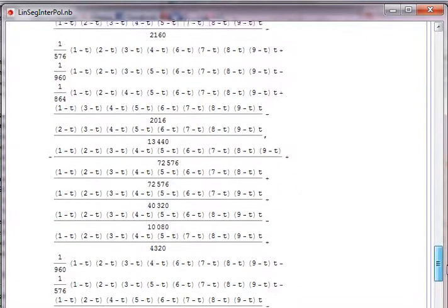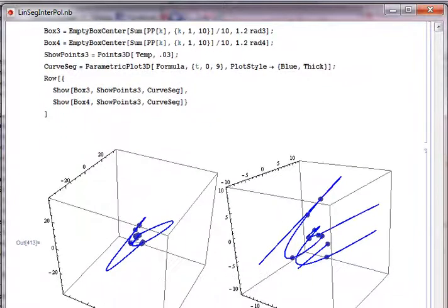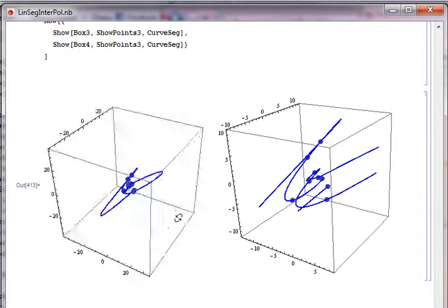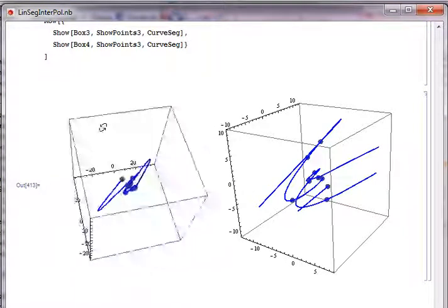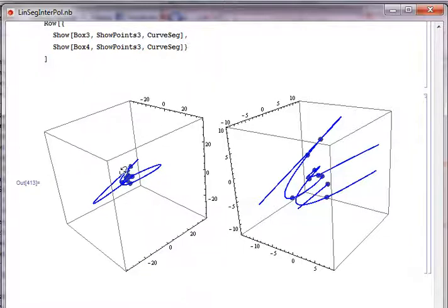Of course, the formula is nasty like this, but Mathematica computed it. And then I plotted it. I zoomed out so that I can see the entire shape of the parametric equation I created, and all these 10 points are inside there.